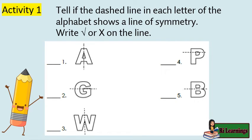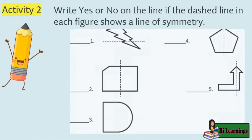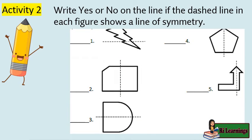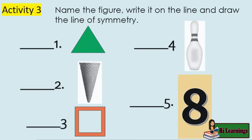Activity 1: Tell if the dashed line in each letter of the alphabet shows a line of symmetry. Write check or X on the line. Activity 2: If the dashed line in each figure shows a line of symmetry. Activity 3: Name the figure, write it on the line, and draw the line of symmetry.